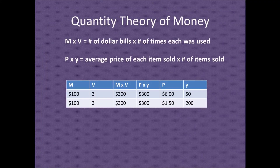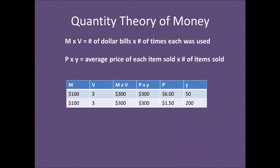Here's an example: if the money supply is 100 and each dollar bill gets used an average of three times, then M times V equals $300. Therefore the money spent on all goods and services is also $300. If there were 50 goods and services, then the average price must have been $6 each. With the same money supply and velocity but with 200 things being purchased, the average price level must have been $1.50 each.